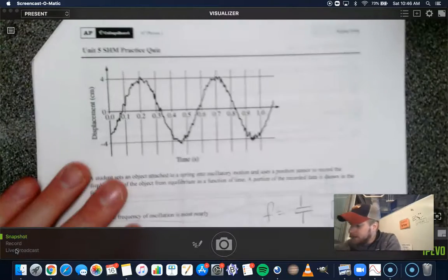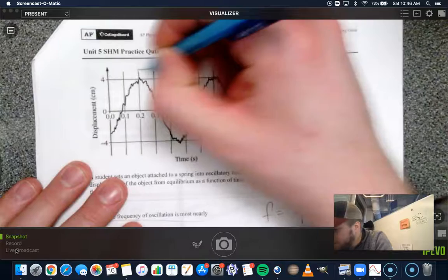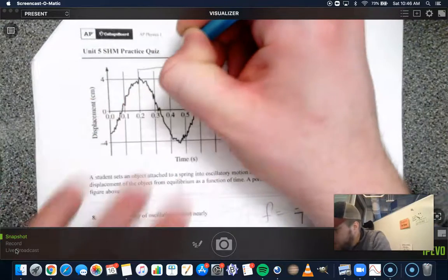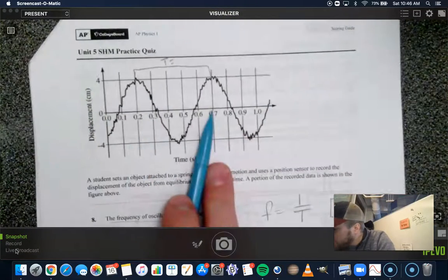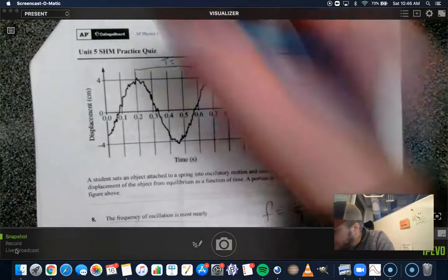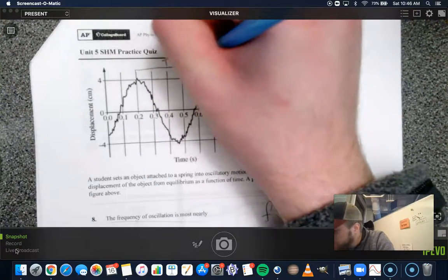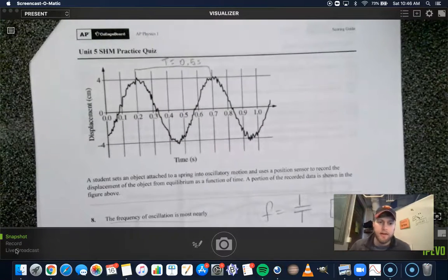So, I think the easiest place to see that is from here to here. That is a period of from 0.2 to 0.7. That's half a second period.